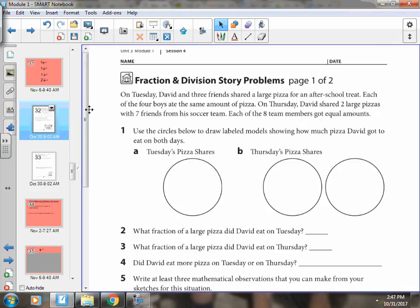On Tuesday, David and three friends shared a large pizza for an after-school treat. Each of the four boys ate the same amount of pizza. On Thursday, David shared two large pizzas with seven friends from his soccer team. Each of the eight team members got equal amounts. Number one says, use the circles below to draw labeled models of how much pizza David got to eat on both days.